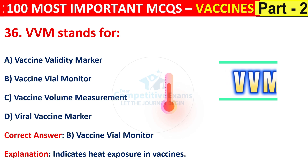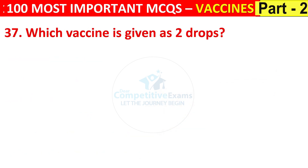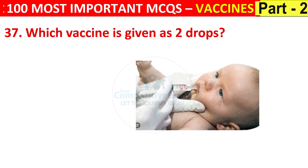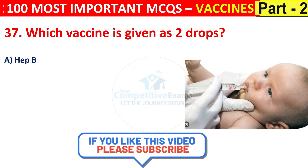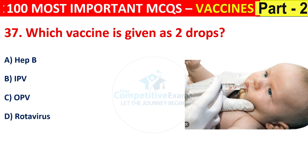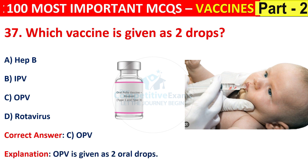Question number 37. Which vaccine is given as two drops? Options are hepatitis B, IPV, OPV, or rotavirus. The correct answer is C, that is OPV. OPV is given as two oral drops.